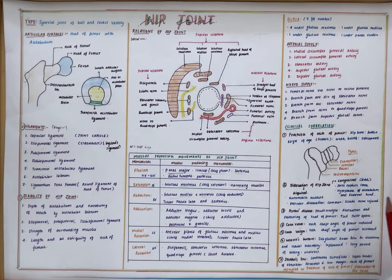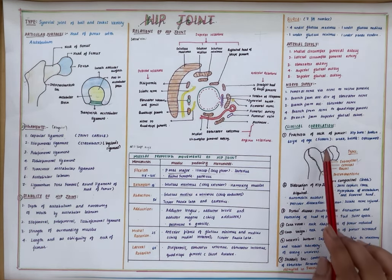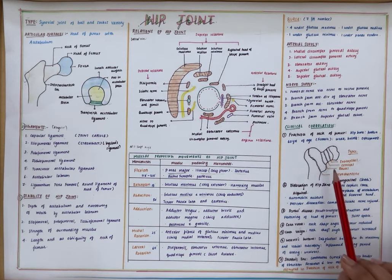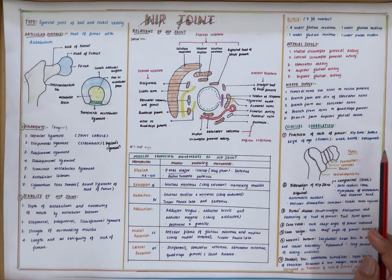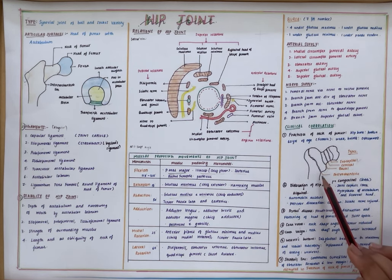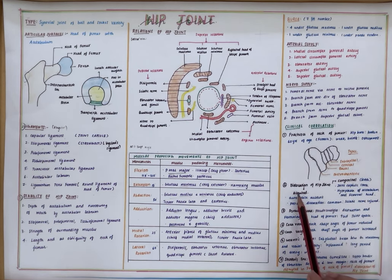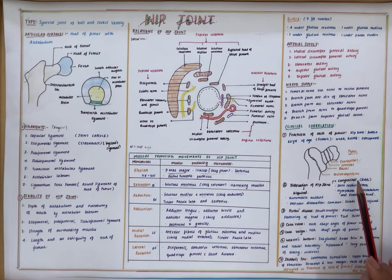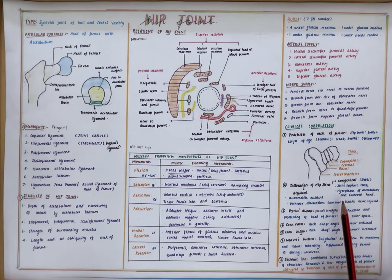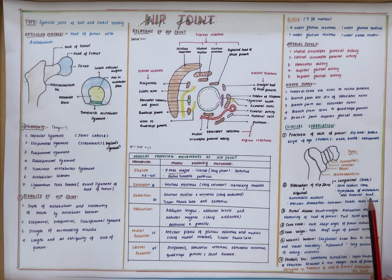Coming to the clinical correlations, the most important one is fracture of the neck of the femur, which can be due to old age and osteoporosis. The types of fractures can be sub-capital, cervical, basal, or per-trochanteric fracture. Dislocation of the hip joint is also very common; it can be either congenital or acquired. In congenital dislocation, it can be due to a loose joint capsule or hypoplasia of the acetabulum or the femoral head.